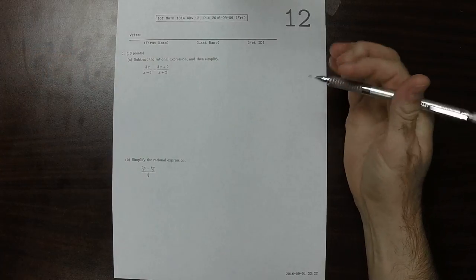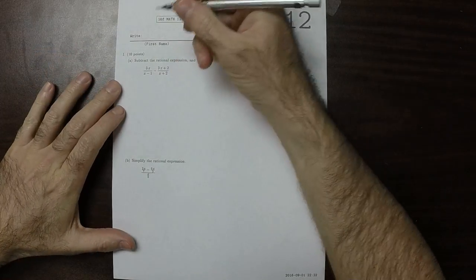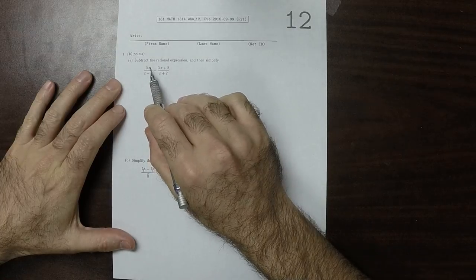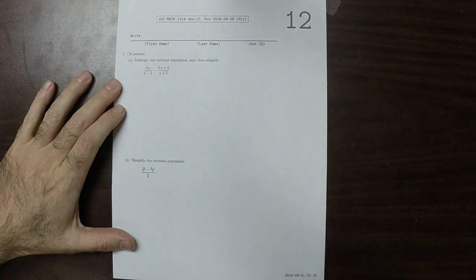This is the key to written homework 12. It says subtract the rational expression and then simplify.